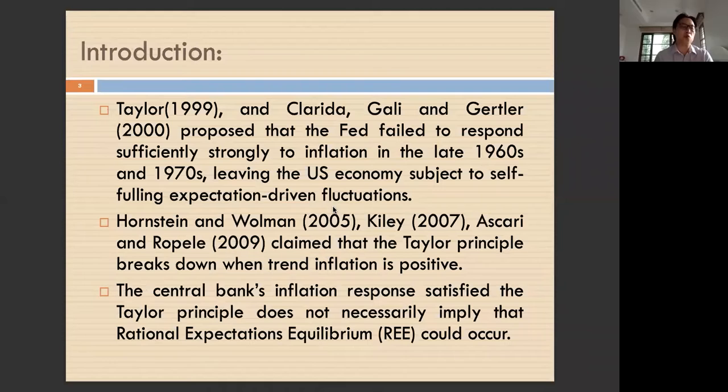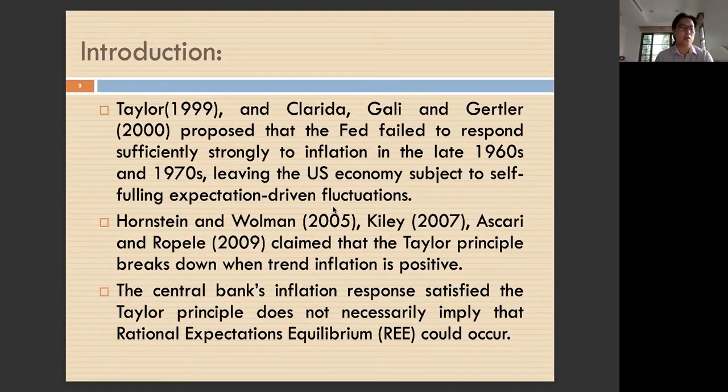During 1960 to 1978, before Paul Volcker became the Fed chairman, inflation was high. But since 1980, during the Volcker and Greenspan years, inflation was much lower — what we call the great moderation. During the high inflation period, the Fed increased its policy rate by a smaller amount and the economy was unstable and inflation spiraled out of control.